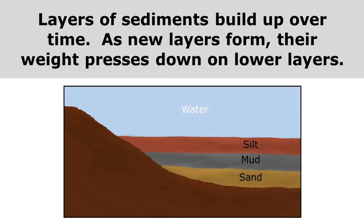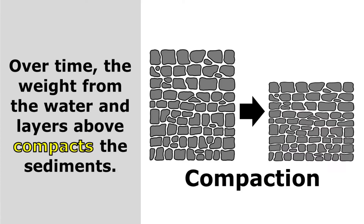Layers of sediments build up over time. As new layers form, their weight presses down on the lower layers. Over time, the weight from the water and layers above compacts the sediments. Compaction occurs when the sediments are squeezed closer and closer together.